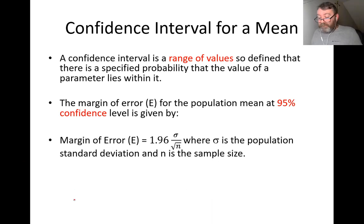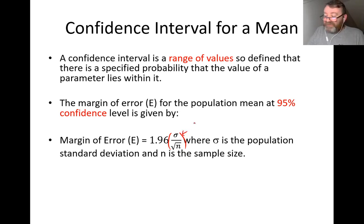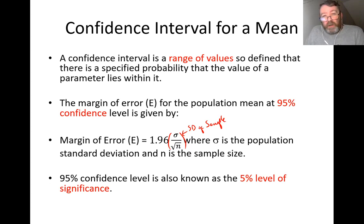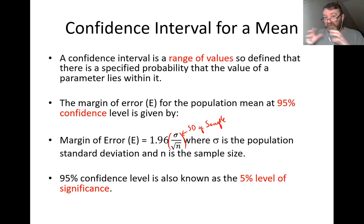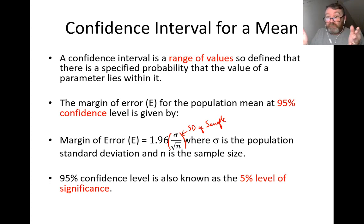A margin of error is a number added to and subtracted from a given statistic to give a range of numbers inside which, with 95% confidence, the population parameter lies. Also note: a 95% confidence level is the same as the 5% level of significance. A 90% confidence level is a 10% level of significance; 99% confidence is a 1% level of significance. When you add the confidence level and level of significance, you get 100. Questions use both terms interchangeably.